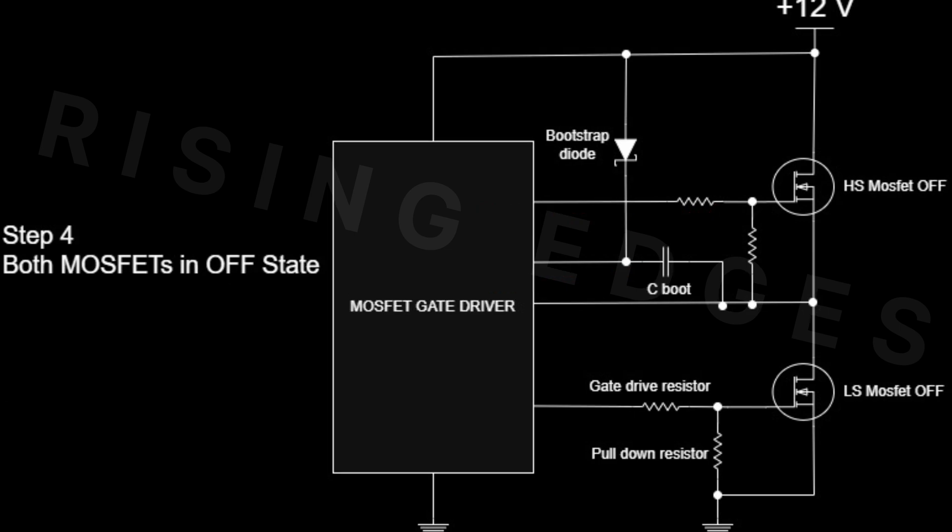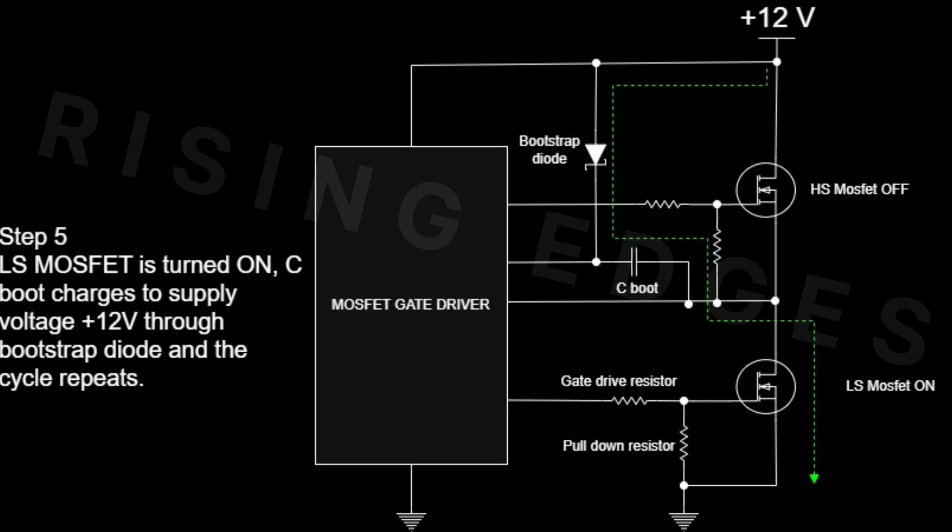Again, both MOSFETs are OFF, introducing an appropriate dead time. Finally, the low-side MOSFET turns ON again, recharging C-boot to 12V through the bootstrap diode, and the cycle repeats.